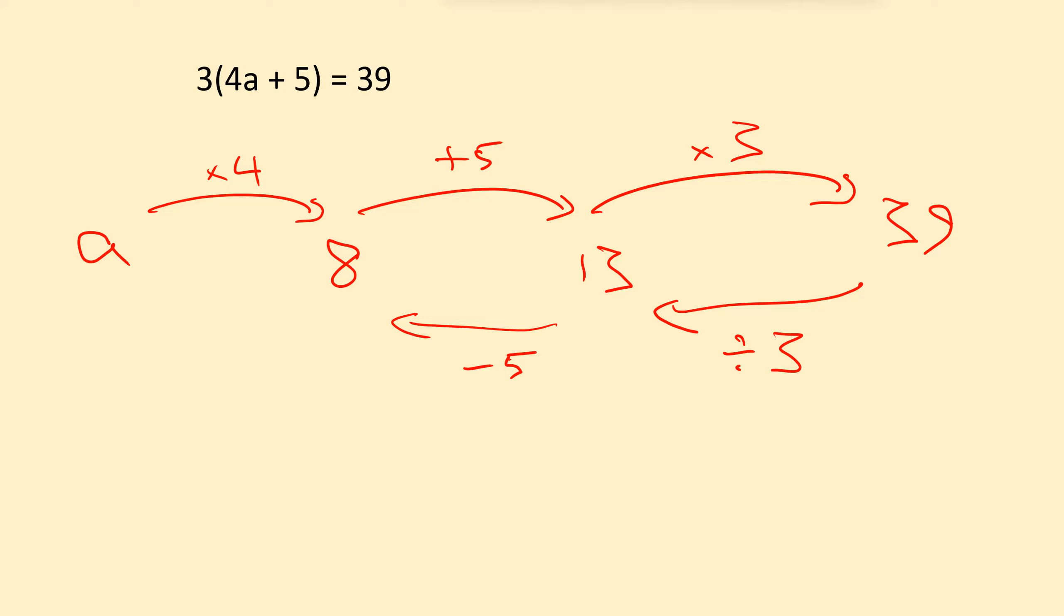We have 8. And then we want the inverse of times 4. Well, that would, of course, be divided by 4. So we have 8 divided by 4. Gets us back to a.